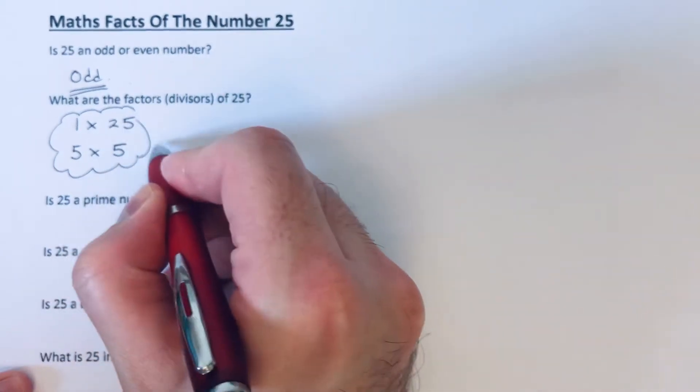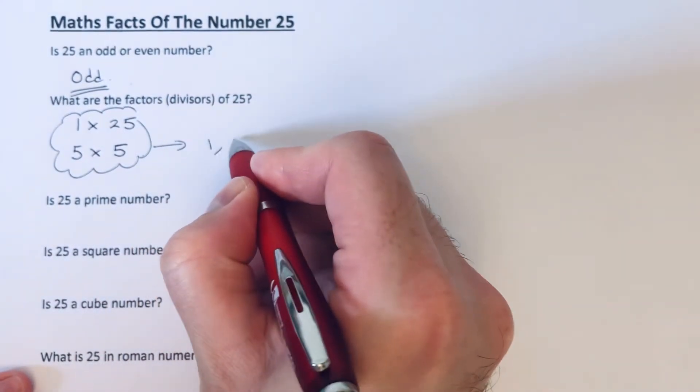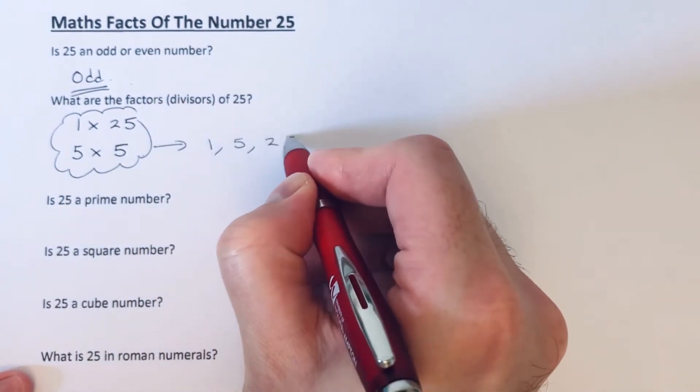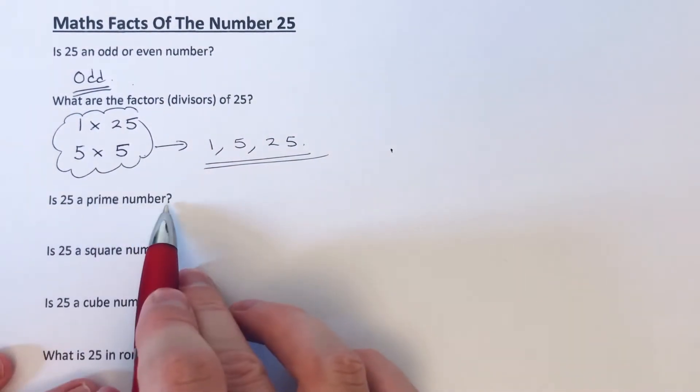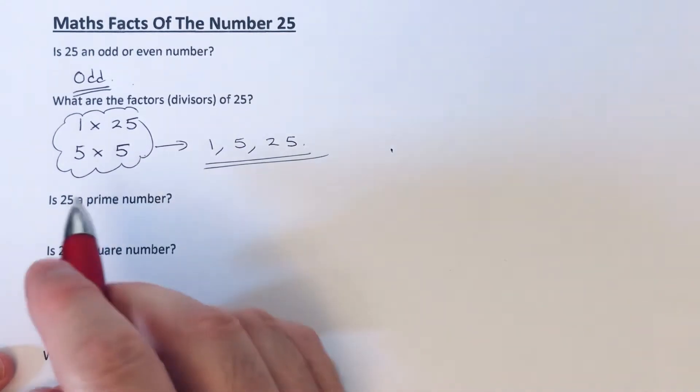So we've just got three factors here: 1, 5, and 25. Is 25 a prime number? A prime number has exactly two factors. This one has three factors, so the answer to this is no.